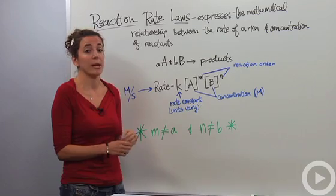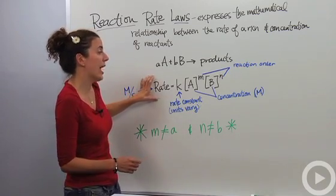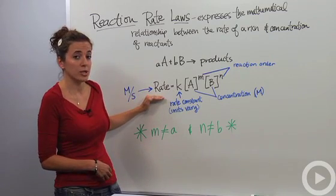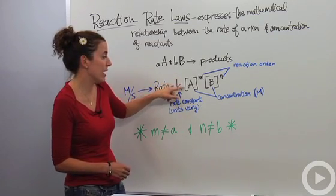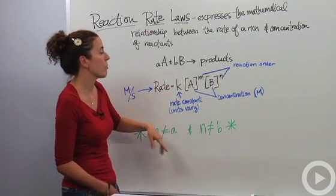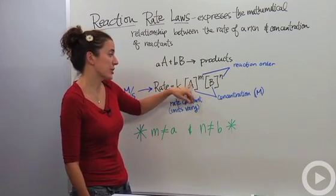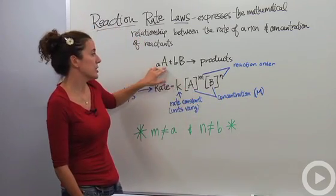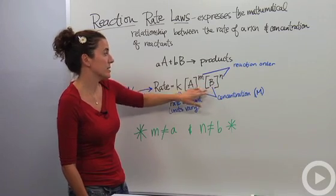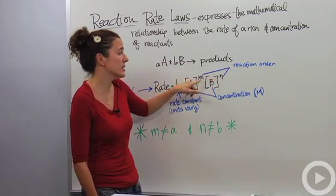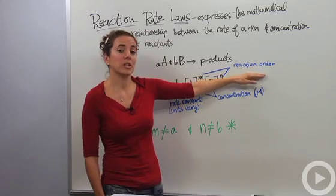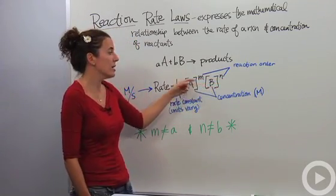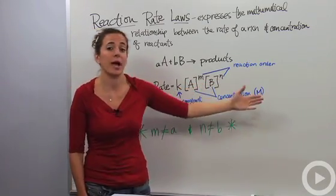K actually varies with temperature, so this rate law will change if the temperature is raised or lowered — K is dependent on temperature. The bracket notation means concentration in molarity, that is moles per liters. These concentrations are raised to certain powers, which we call the reaction order. The higher these numbers, the more important those reactants are in terms of how fast the reaction takes place.